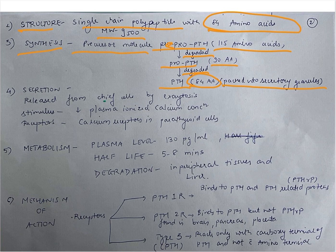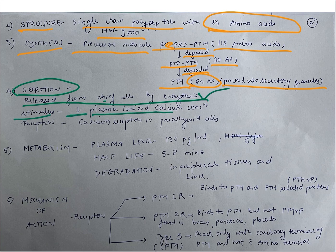Now let's see secretion. PTH is released from chief cells by exocytosis. The stimulus is decreased plasma ionized calcium concentration. The receptors involved are calcium receptors in the parathyroid cells.